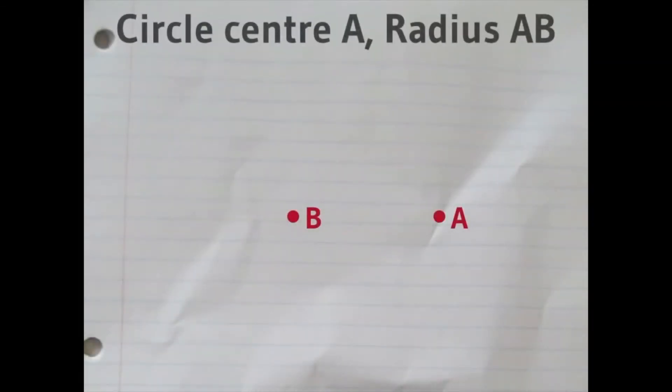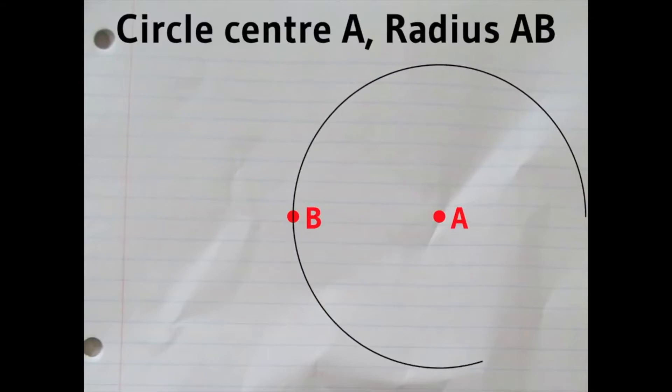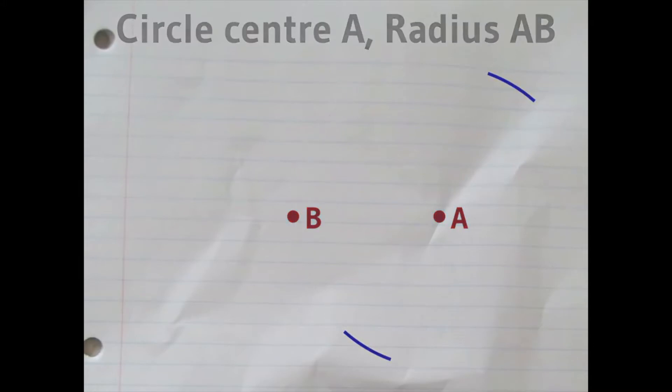Starting with two points on the page, the first step is to draw a circle with centre A and radius AB. You actually only need to draw two little bits of the circle as shown there.